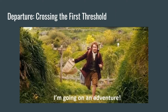Bilbo's crossing of the first threshold is when he takes the adventure into his own hands and decides he is going to join the company. Even though he woke up late and didn't really think he wanted to go, he joins anyway. It's his mother's side — the Took side, Belladonna — that takes over. When he sprints out of the Shire to catch up with the dwarves who have already started their trek, that's when he commits to doing this for himself. That is crossing the first threshold.